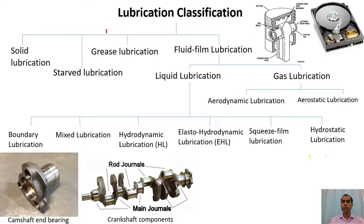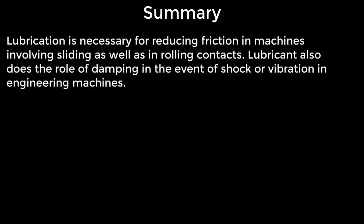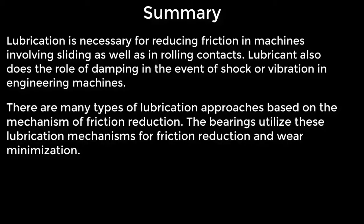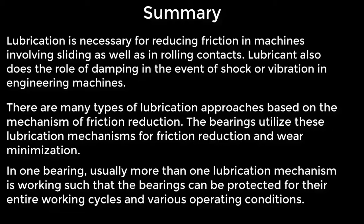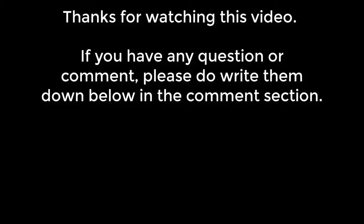There are many examples of all kinds of lubrication systems in engineering components and machines. To summarize: lubrication is necessary for reducing friction in machines involving both sliding and rolling contacts. Lubricant also plays the role of damping in the event of shock or vibration. There are many types of lubrication approaches based on the mechanism of friction reduction. Bearings utilize these lubrication mechanisms for friction reduction and wear minimization. In one bearing, usually more than one lubrication mechanism is working, so that the bearing is protected throughout its entire working cycle and various operating conditions. Thanks for watching this video. If you have any questions or comments, please write them below in the comment section.